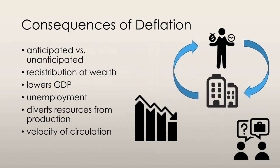Workers with long-term wage contracts would experience an increase in real wages, and firms would lose profits because of this. Employers would respond to this by hiring fewer workers, and so unemployment and output fall.